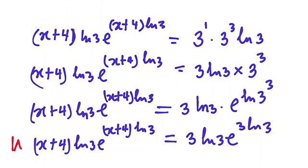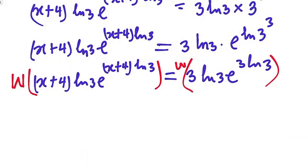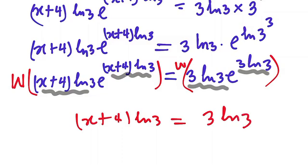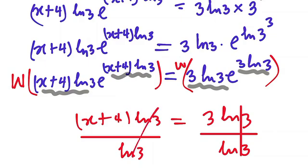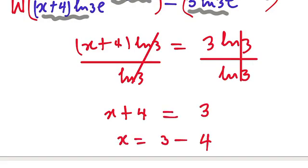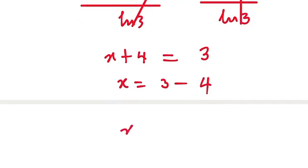So now let's apply the Lambert W function on both sides of the equation. Since both sides are in the form a times e to the power of a, applying Lambert W gives us x plus 4 times ln of 3 equals 3 ln of 3. Now we can divide both sides by ln of 3 — this cancels — and we're going to have x plus 4 equals 3. So from there, x equals 3 minus 4, giving us x equals minus 1.